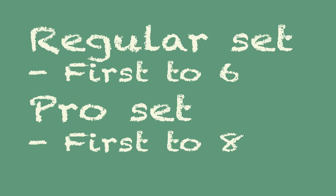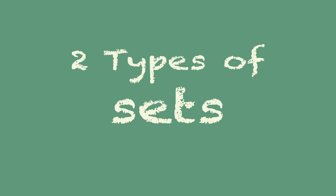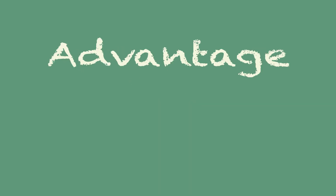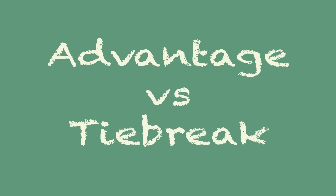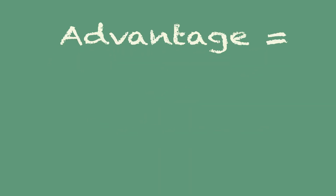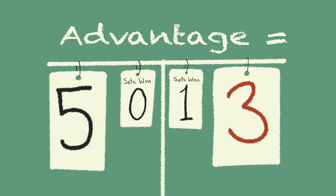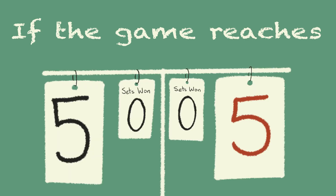Regular sets are first team to 6 game points. Pro sets are 8 game points. There are two ways to play out tennis sets: advantage sets and tie break sets. Advantage means win by 2. If the game reaches 5 all, you continue playing until the winner is 2 points ahead.